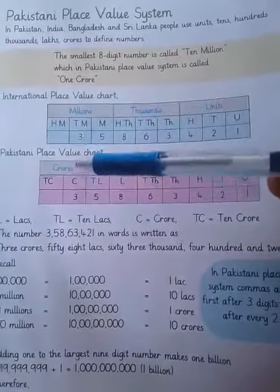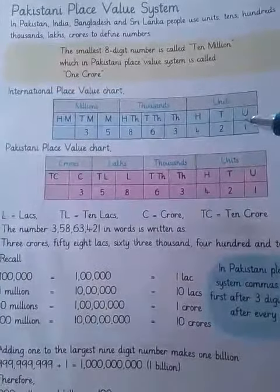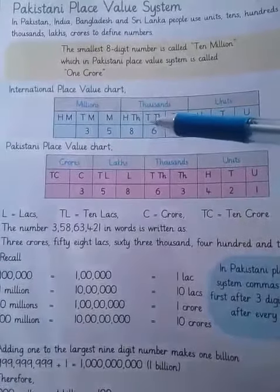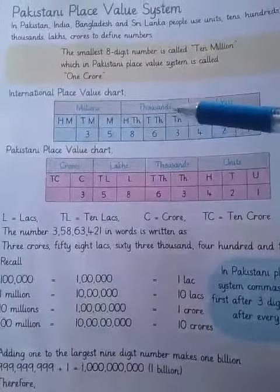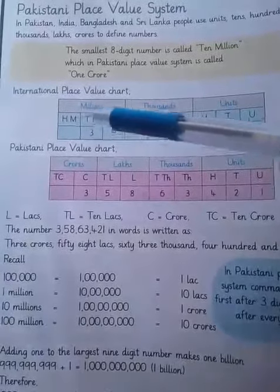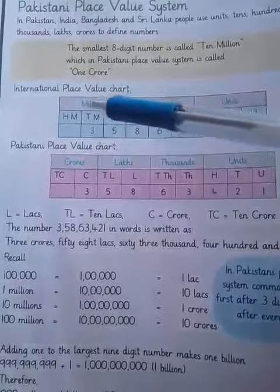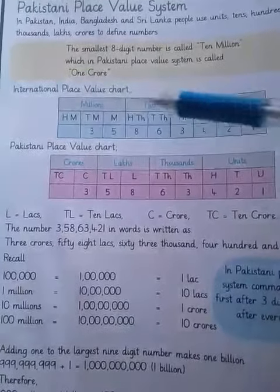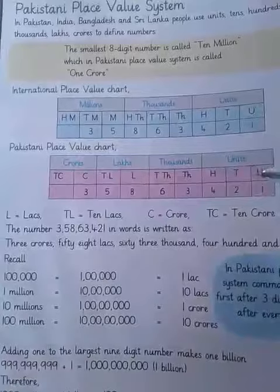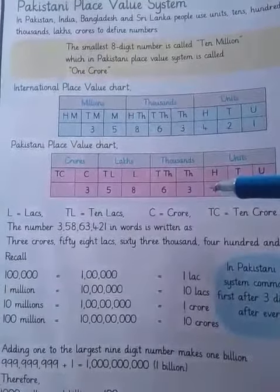In the international place value chart, look here: units, tens, hundreds — these three are thousands place values. Then million, 10 million, 100 million — these three are millions. So after three values of thousands, there are three values of millions. In the Pakistani place value chart, units, tens, hundreds are the same three values as in the international system.